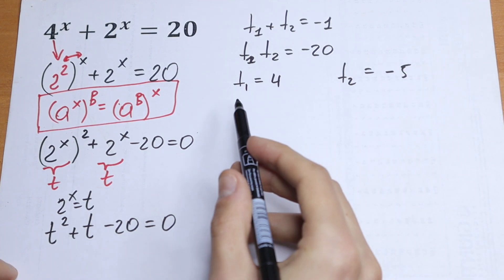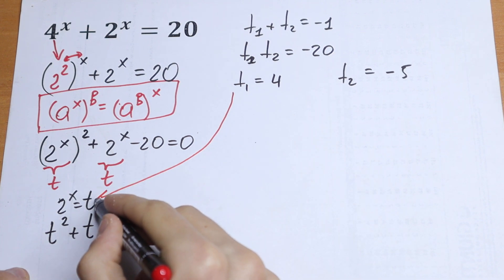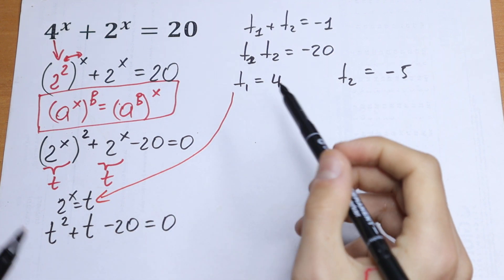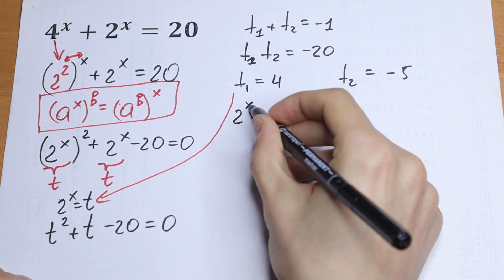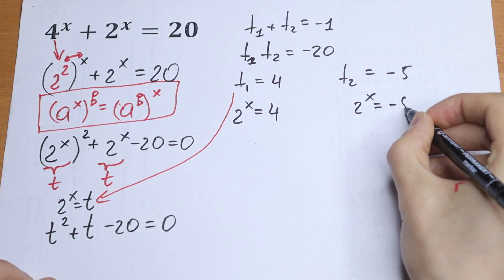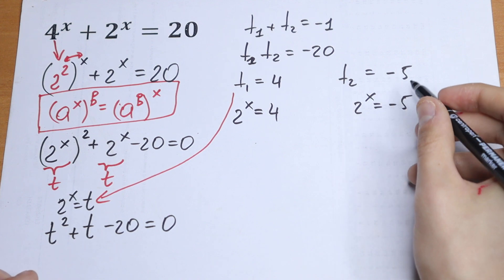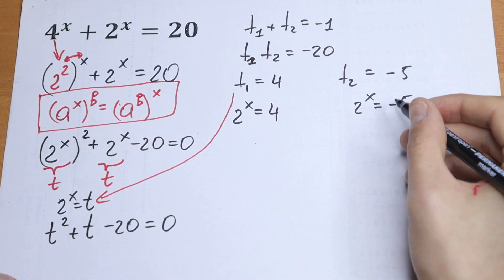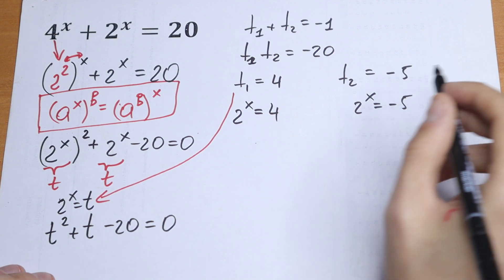So we'll have, of course, two equations. t equals 2 to the power x. So 2 to the power x equals 4 and 2 to the power x equals minus 5. Of course, this equation doesn't have any root because our exponential function cannot be equal to a negative value.